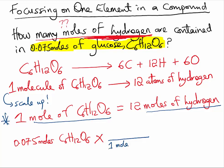And the relationship is that normally one mole of C6H12O6 will give 12 moles of hydrogen. Moles of the glucose will cancel out.